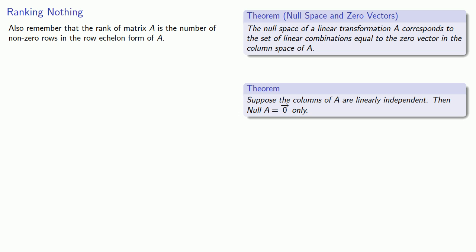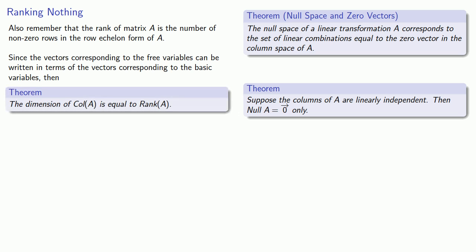Now every one of those zero rows corresponds to a free variable and since the vectors corresponding to the free variables can be written in terms of the vectors corresponding to the basic variables, then we get the following theorem. The dimension of the column space of A is equal to the rank of A.